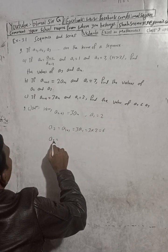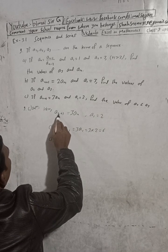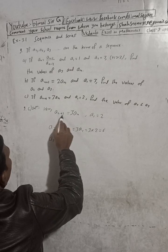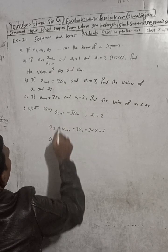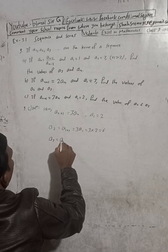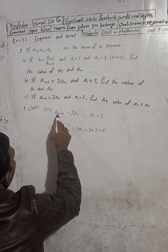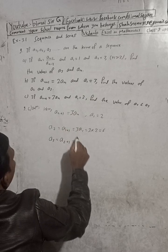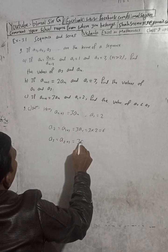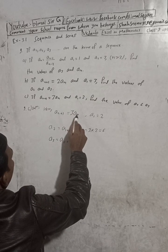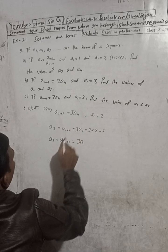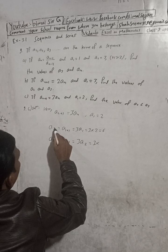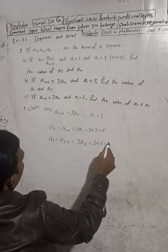To find a3, put n equal to 2 in the formula. So a_(2+1) equals 3 times a2, meaning a3 equals 3 times a2. a2 value is 6, so a3 equals 3 times 6 equals 18.